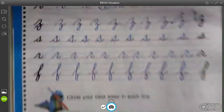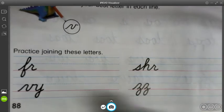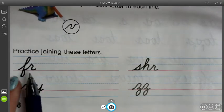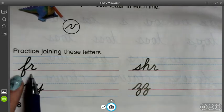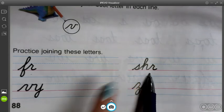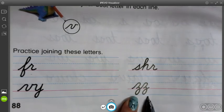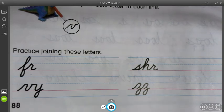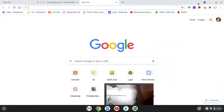When you have this done, you're going to practice on the bottom, and I want you to do this part by yourself. After you've practiced your V, Z, S, R, and F, practice this FR blend, SHR, VY, and ZZ. Turn in your completed page 88 on Canvas.